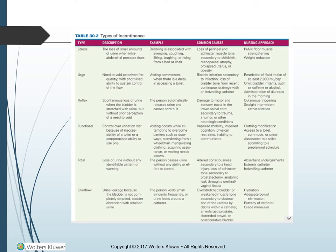Types of incontinence — Table 30-2, page 700. Stress incontinence is the loss of small amounts of urine when intra-abdominal pressure rises, such as with sneezing, coughing, lifting, laughing, or rising from a bed or chair. Causes include loss of perineal and sphincter muscle tone secondary to childbirth, menopausal atrophy, prolapsed uterus, or obesity. Nursing approach: pelvic floor muscle strengthening (Kegels) and weight reduction.